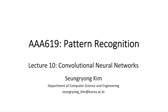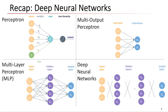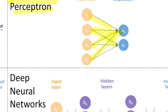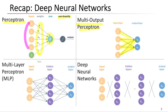Now let's start looking at what the convolutional neural network is. A perceptron has some weights with a summation term and a non-linearity or activation function. Multi-layer perceptron uses additional hidden layers. The deep neural network increases the number of hidden layers. This is the definition of the deep neural network.